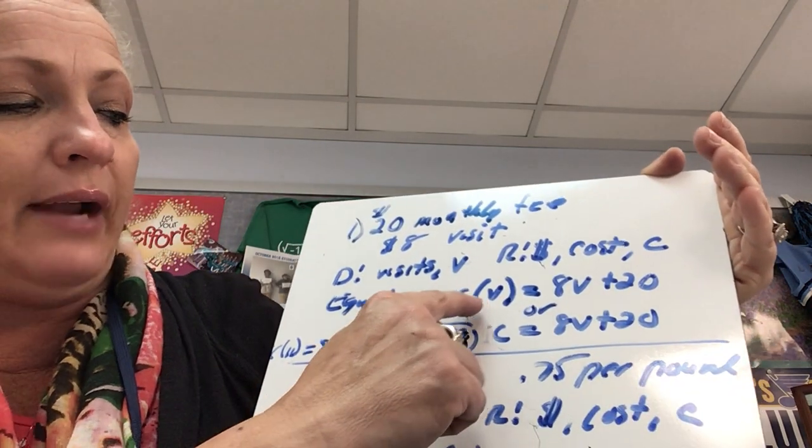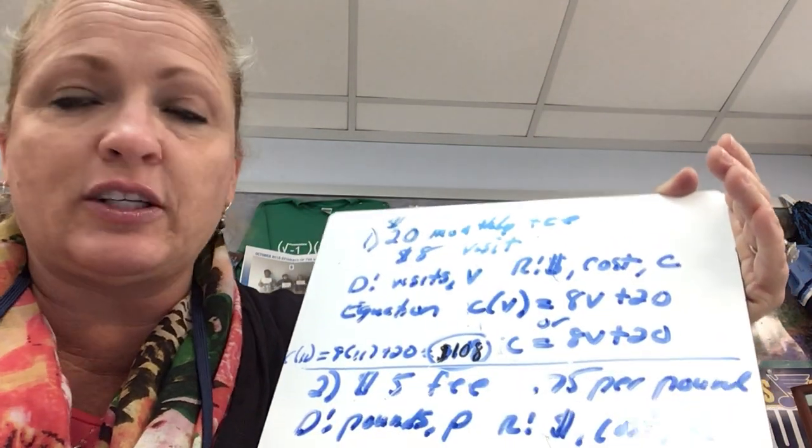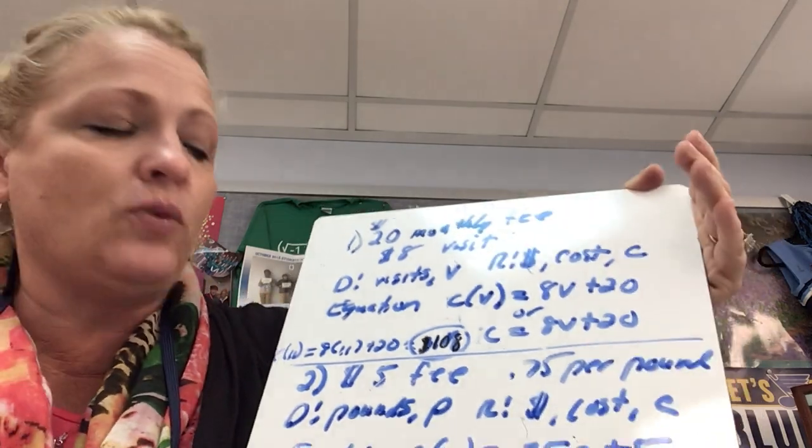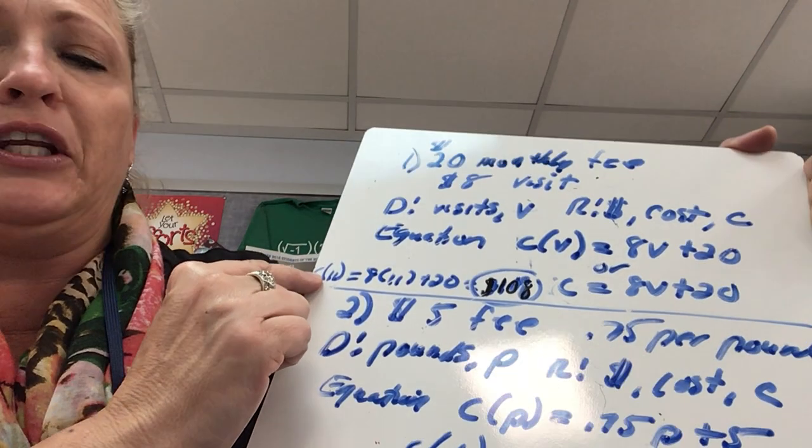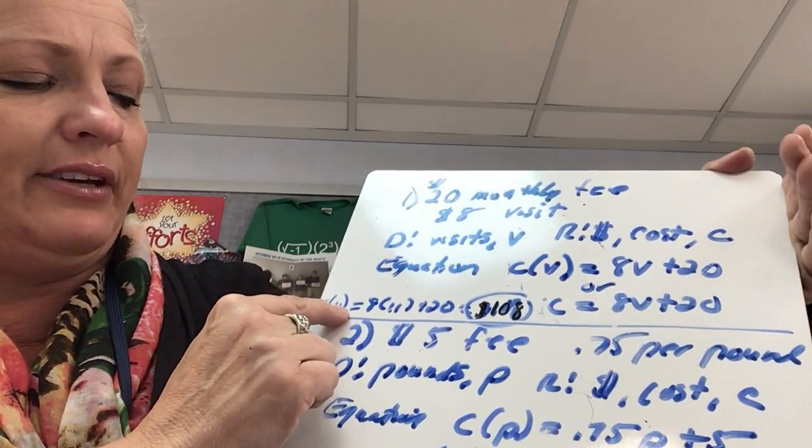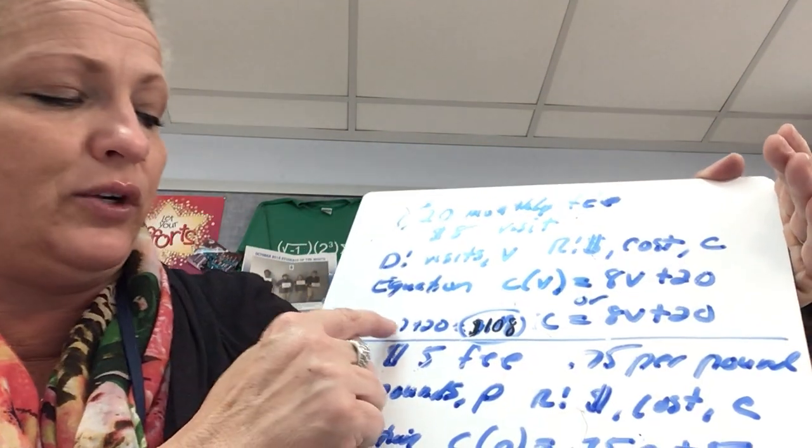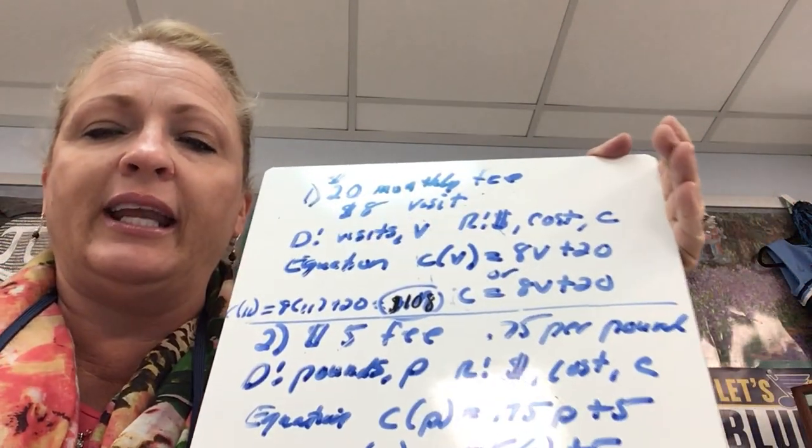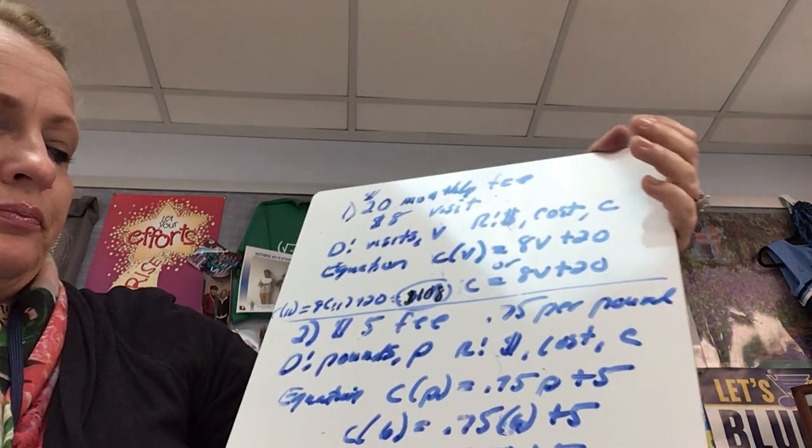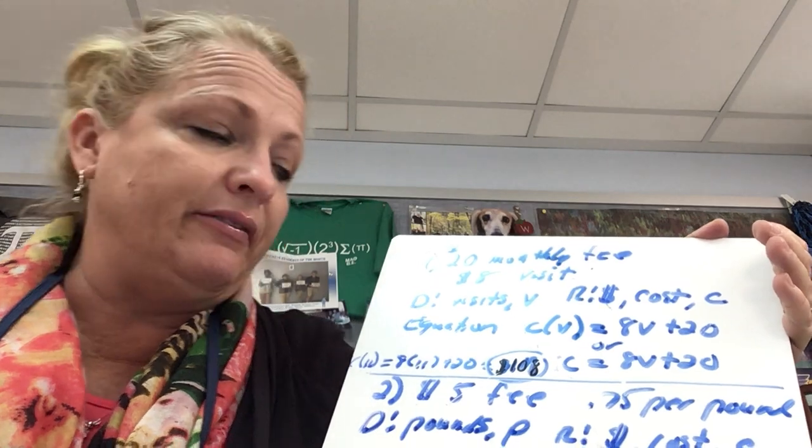No matter what, your lowest value you're gonna pay is $20 a month. Now you, I used function notation. You could have said C equals 8V plus 20, you could have said Y equals 8X plus 20. Now the next question asks how much will it cost for 11 visits for the month. Using notation I said C of 11 equals, that's just a way to ask, I got to know that my domain stands for my visit so I put an 11 for X or V. So that's 88 plus 20, so it would be $108 per month, or for that month for the 11 visits.